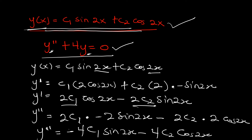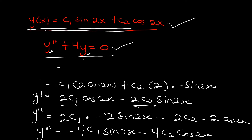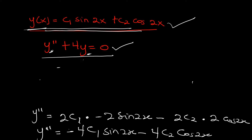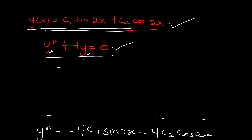Now let's make some space and continue. We have the second derivative, and we are going to substitute it into the differential equation to see if we get zero. If we do get zero, then the function y of x is confirmed to be a solution to that particular differential equation.